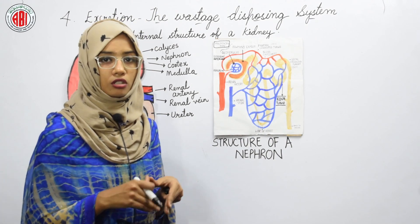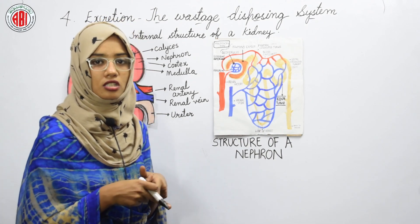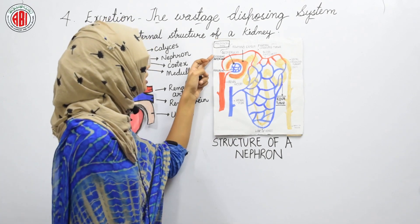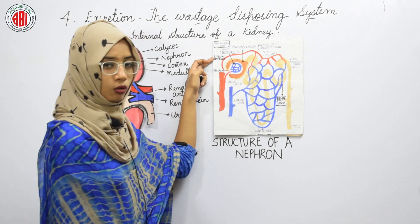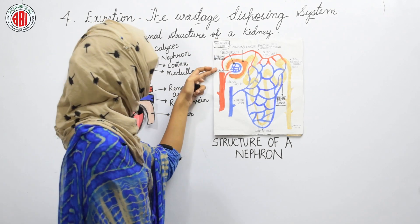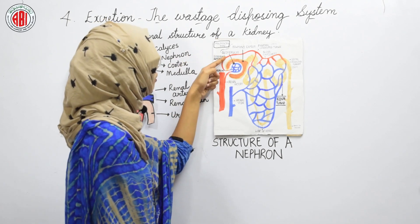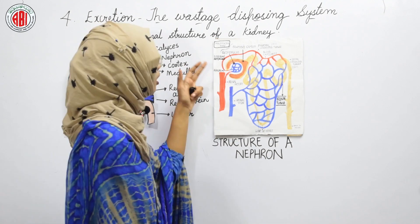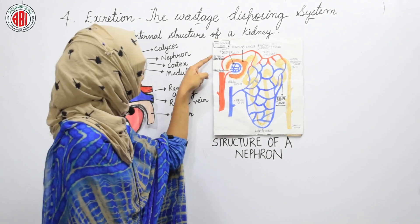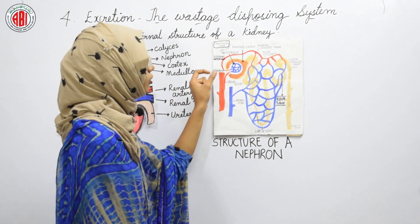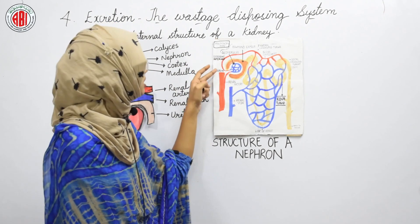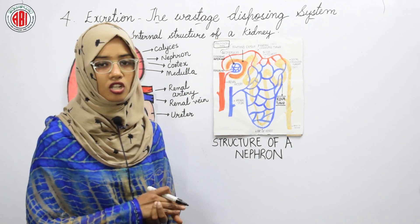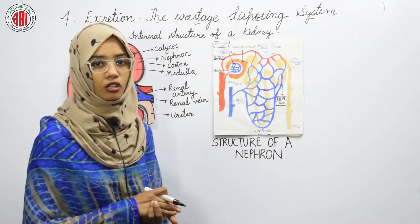The pelvis is connected to the ureter, and the ureter is connected to the urinary bladder, which is a sac-like organ that holds the urine. We can also see arterioles attached to the glomerulus. The afferent arteriole is broader, while the efferent arteriole is narrow. This narrowness of the efferent arteriole creates blood pressure and pushes blood into the glomerulus.